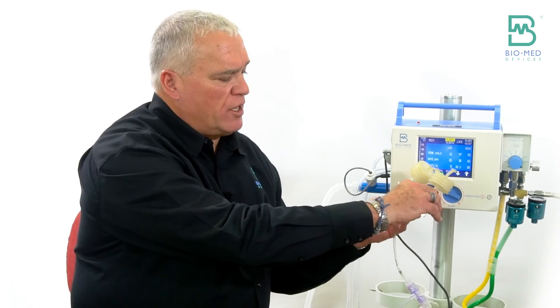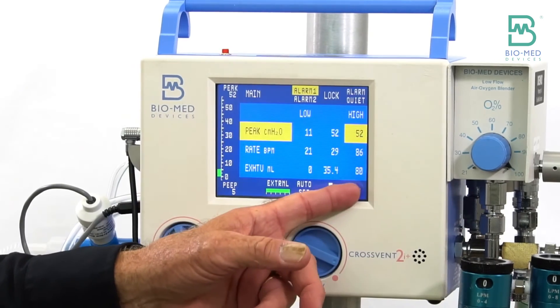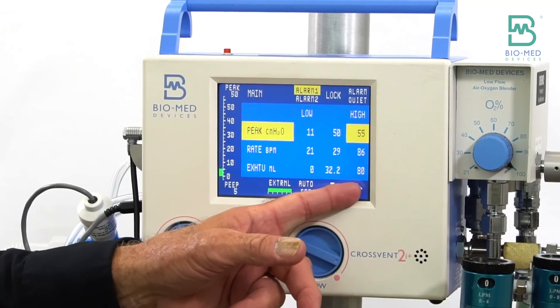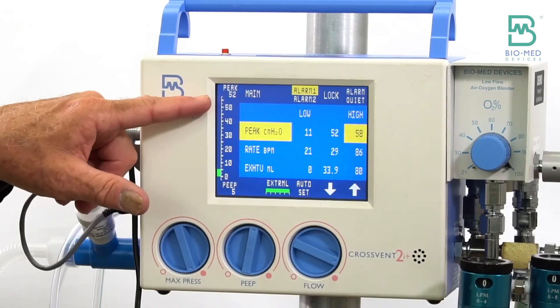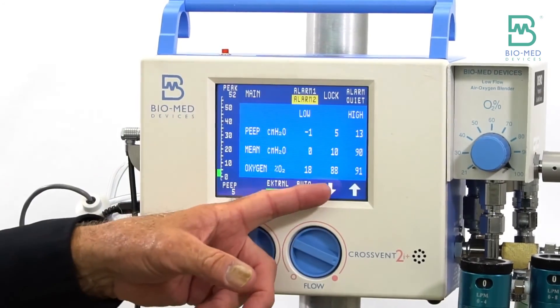First of all, now I'm hitting my high pressure alarm. It's taking 52 centimeters of pressure. Now look at my volume - I'm at 33-34 instead of 20.